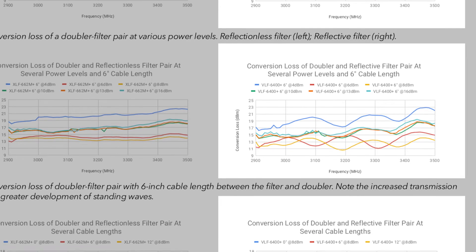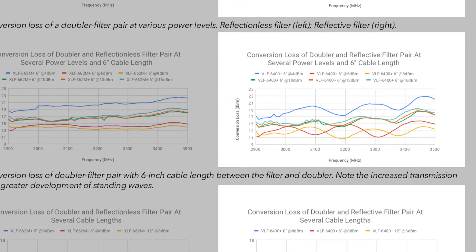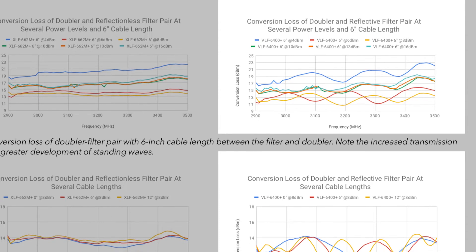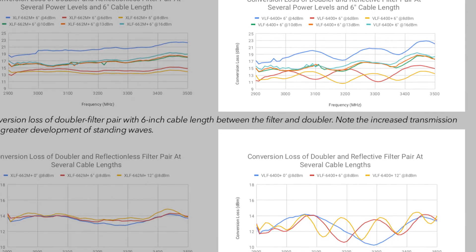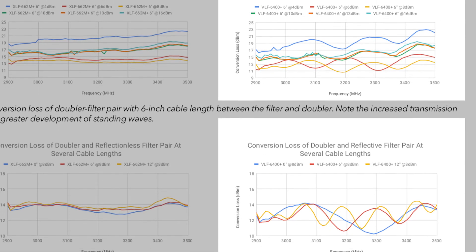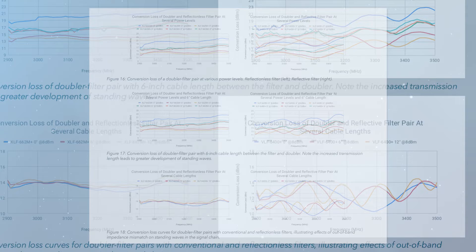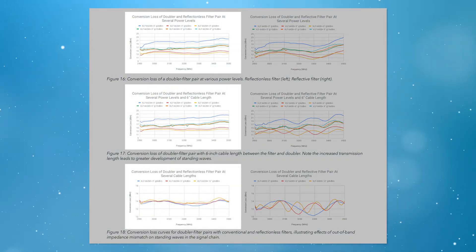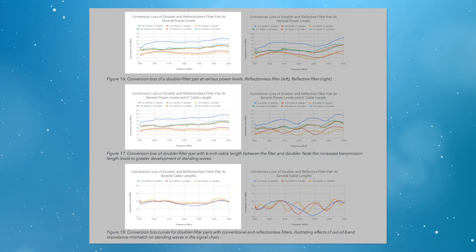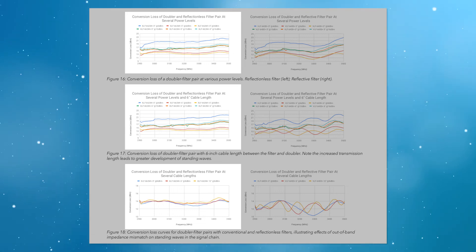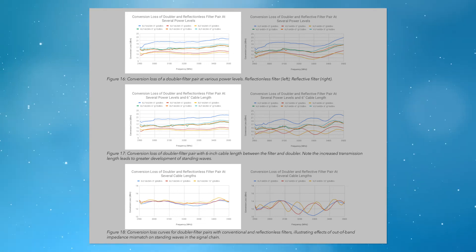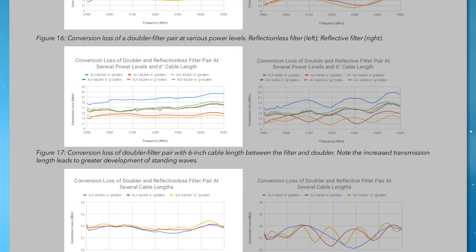In longer multiplier chains, the reflective nature of conventional filters can degrade the conversion loss flatness and may ultimately increase the complexity of the system. In comparison, a well-known combination of a multiplier with a reflectionless filter can achieve better conversion loss efficiency while minimizing cost.